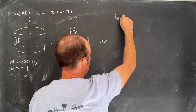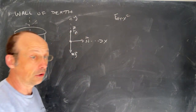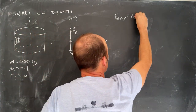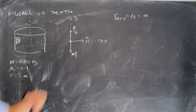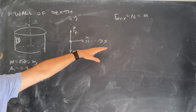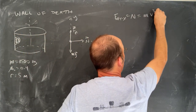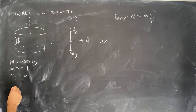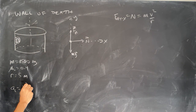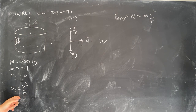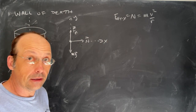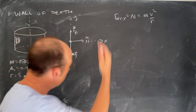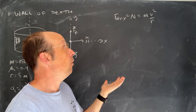Now I can write my force equations. F_net in the X direction is just N, and that equals M times acceleration. Since it's circular acceleration, I can write that as M·V²/R — remember, a_c = V²/R is the magnitude of acceleration for an object moving in a circle. Can I solve this for V? No, because I don't know N. N is a force of constraint. If you don't know something, you get another equation.